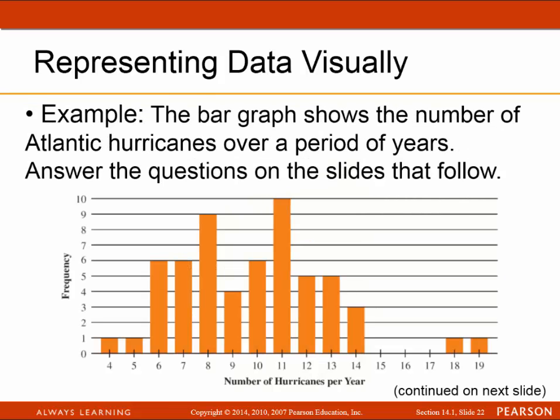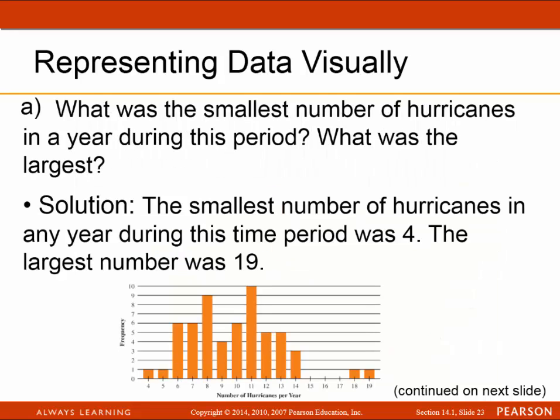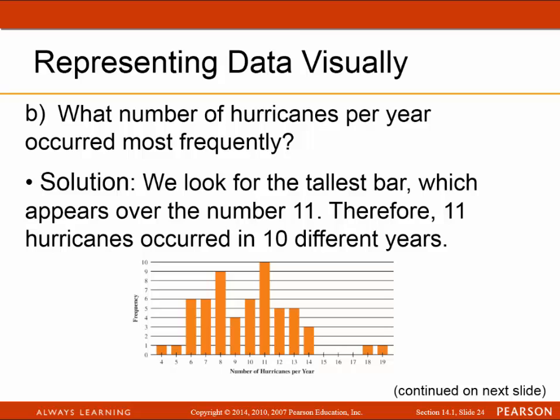Now let's look at getting information from a bar graph. This shows the number of Atlantic hurricanes over a period of years. The first question: what was the smallest and largest number of hurricanes in a year during this period? The solution is that the smallest was 4 and the largest was 19. The number of hurricanes that occurred most frequently was 11, which occurred in 10 different years.